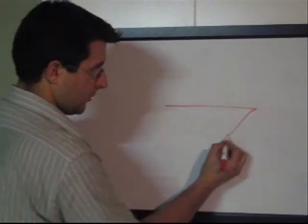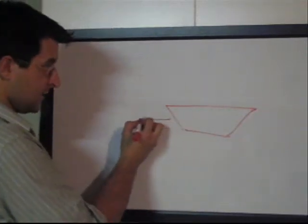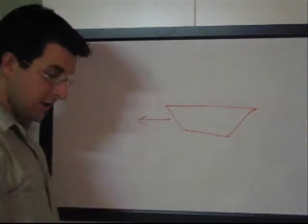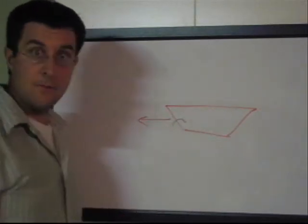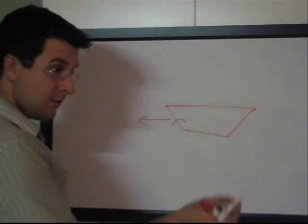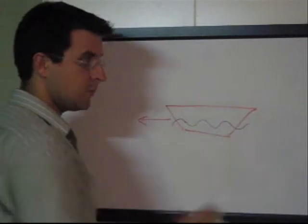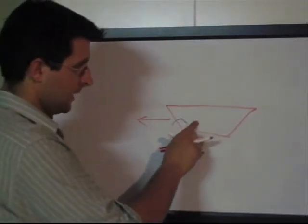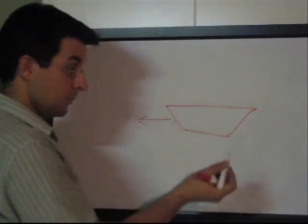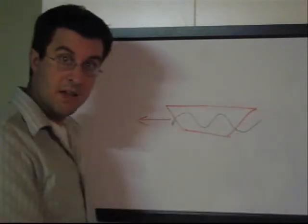So if we imagine that my terrible drawing here is our boat and that it's moving in this direction, it should be intuitive that it actually creates a little wave near the front of the boat. Waves being what waves are, this propagates backwards in a repeating pattern. So it's probably also intuitive that as the boat moves faster, the wave gets a little bigger — like so.